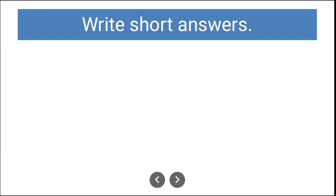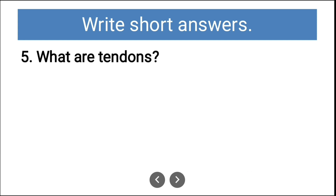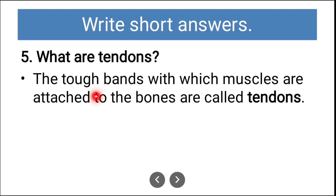Fifth short answer: What are tendons? The tough bands with which muscles are attached to the bones are called tendons. These are the tissues where muscles are joined to bones — muscles are attached to the bones with the help of these tough bands called tendons.